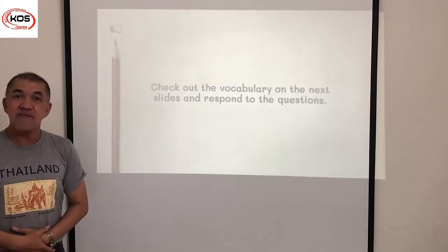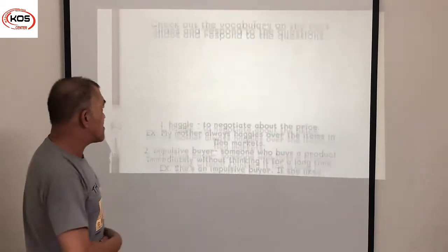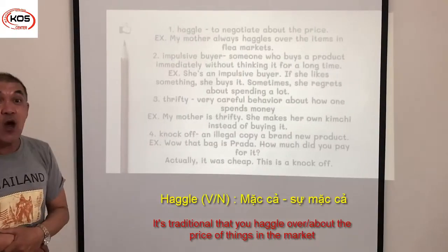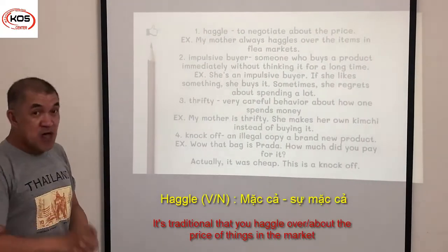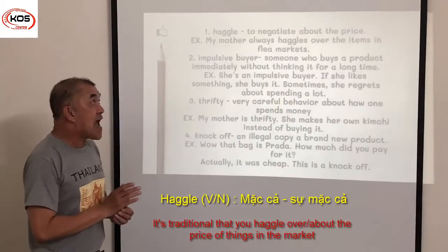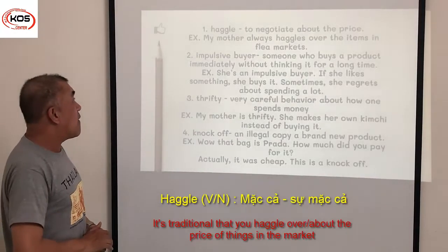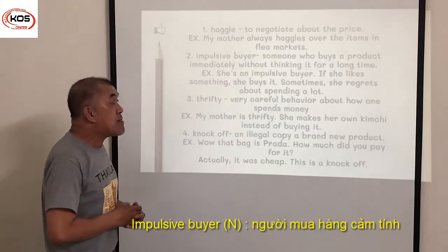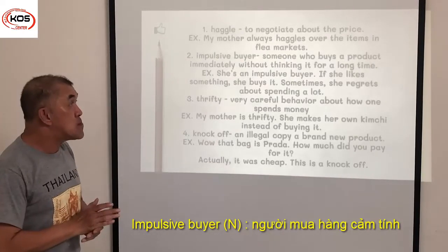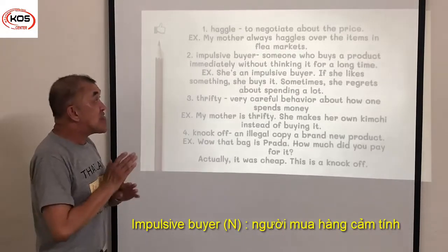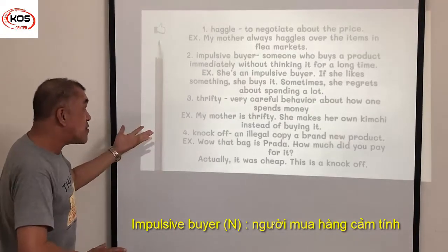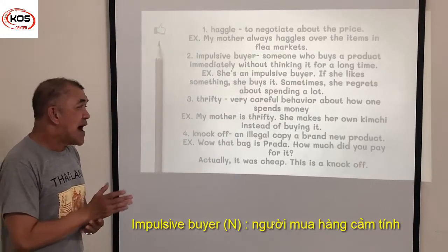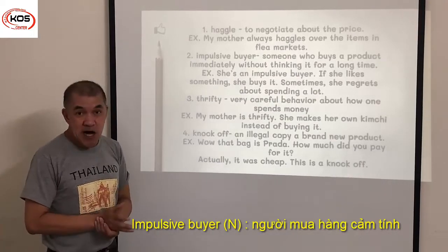Now we're going to learn about vocabulary. Number one: haggle — to negotiate about the price. Example: My mother always haggles over the items in flea markets. Is your mom good at haggling? Number two: impulsive buyer — someone who buys a product immediately without thinking about it for a long time. Example: She's an impulsive buyer; if she likes something, she buys it. Sometimes she regrets spending a lot.